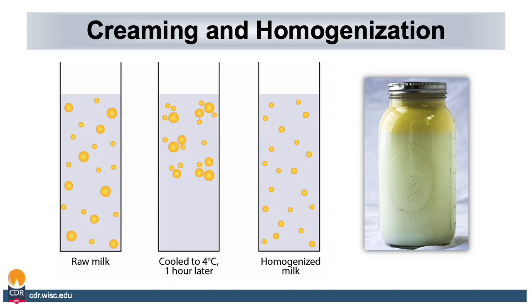Homogenization is important because it prevents creaming off, or the separation of fat from the milk. As you can see, the fat globules in raw milk are very inconsistent in size. Over time, as product is cooled and sits, the cream clumps together and rises to the top. The act of homogenization disperses the fat globules and makes them into smaller particles, which are easier to distribute through the milk.